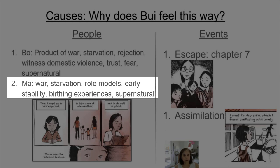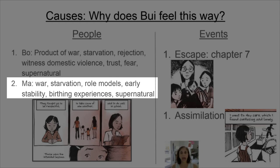Ma too is a product of war and has experienced starvation. The difference between her and Bo is that Ma has had role models — family with money and a mother and father raising her. That early stability in her life has a different effect on Thi. Also, she's had birthing experiences. For the mother there is a different perspective and different fears of what physically happens to a woman's body and the connection to the newborn child. She too has turned to the supernatural for answers to the inexplicable, such as why a baby would die.